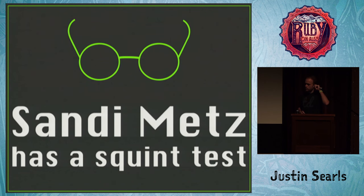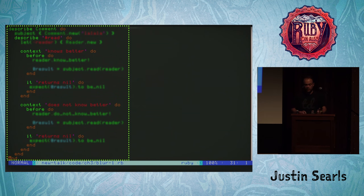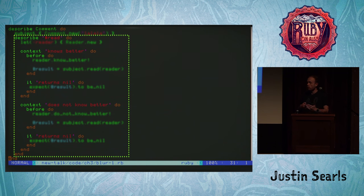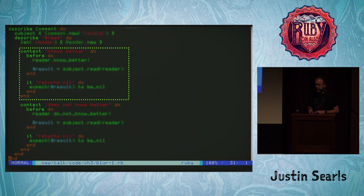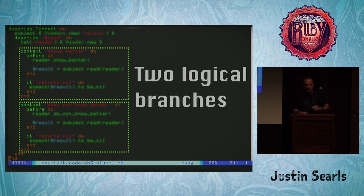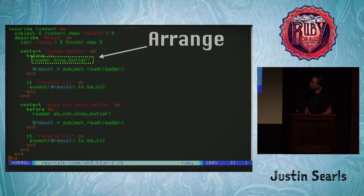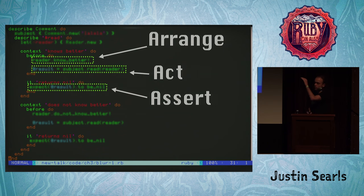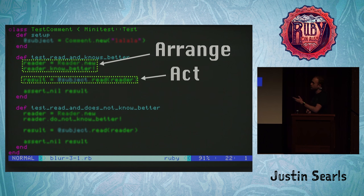Sandy Metz has a thing called a squint test. When I'm looking at a test suite, I open up a bunch of tests at random and look around — how obvious is it for me to tell what the thing under test is, how are the methods under test organized, are they in order lexically to what the subject source file is? I like to use things like an RSpec `context` to indicate the logical branches underneath the method being tested — very orderly, very consistent. Most importantly, I always want to see the arrange/act/assert clearly in the test.